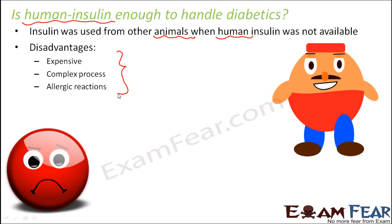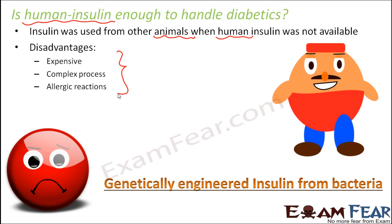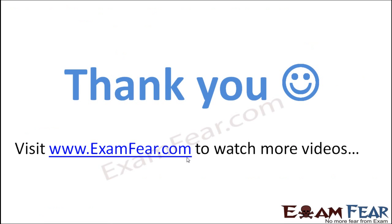Later, with the progress of biotechnology and genetic engineering, it was found that insulin can also be prepared genetically. Genetic engineering can be used to prepare insulin from bacteria — it is not the insulin present inside the bacteria, but rather human insulin is being prepared by making use of bacteria. Bacteria are extremely easy to grow and multiply very fast, so the more insulin we want, the more bacteria we can grow. This was extremely useful, and so began the story of genetically engineered insulin from bacteria — one very important application of biotechnology in the medical field.